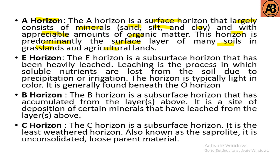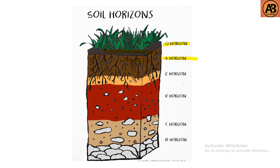The E horizon is a subsurface horizon that has been heavily leached. Leaching is the process in which soluble nutrients are lost from the soil due to precipitation or irrigation. The E horizon is typically light in color and is generally found beneath the O horizon. The E horizon is also called the leaching horizon, from which removal of soil material in suspension occurs.